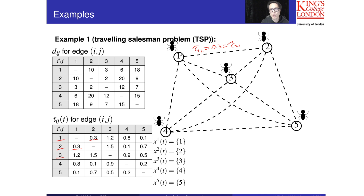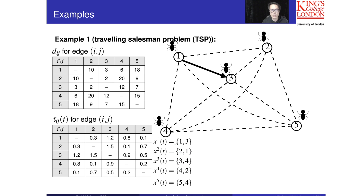To start the algorithm, I place one ant at each node — nodes one through five — giving five ants: x1 starting from node 1, x2 starting from node 2, x3 starting from node 3, and so on. Applying the transition probability, ant n1 goes to node 3, so n1's path begins 1→3. Ant n2 goes from 2 to 1, and so on.